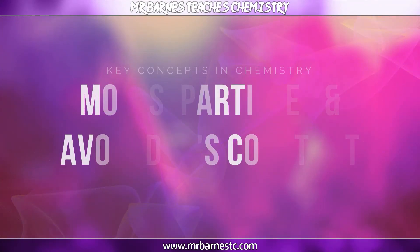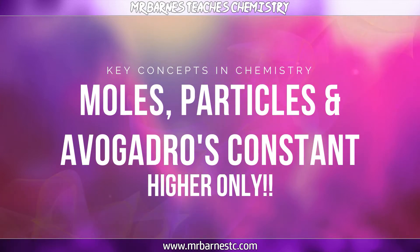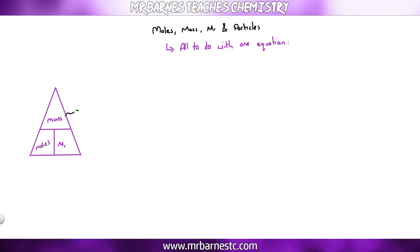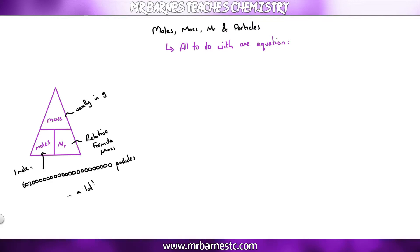The next part covers moles, mass, MR, and particles — how to calculate moles and from that the number of particles. It's all based on one equation: moles equals mass divided by MR, where mass is in grams and MR is your relative formula mass. If you have one mole, you have 6.02 times 10 to the 23 particles — that's Avogadro's constant.